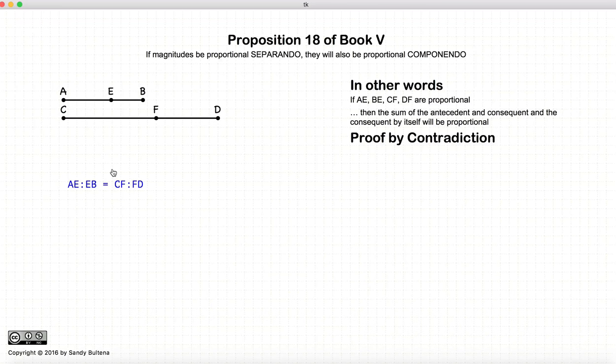Here is our initial conditions: AE to EB is equal to CF to FD.